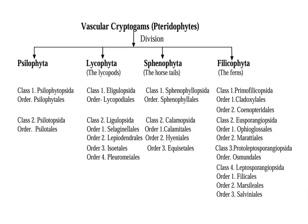Division Psilophyta has two classes: Class 1, Psilophytopsida, and Class 2, Psilotopsida. Class Psilophytopsida has one order — Psilophytales — and Class Psilotopsida has one order — Psilotales. Division Lycophyta has two classes: Class Eligulatopsida having one order, Lycophytales, and Class Ligulatopsida having four orders: Selaginales, Lepidodendrales, Isoitales, and Pleuromyelales.